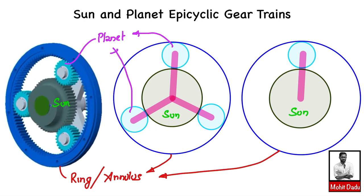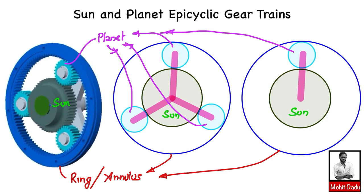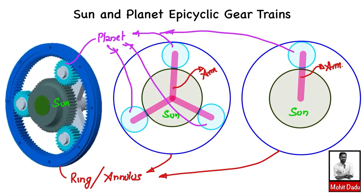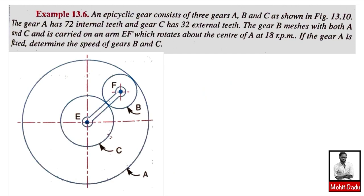In both figures, the three planet gears are represented, along with the arm or planet carrier connecting them. On the right side, the arm connecting all the planet gears is also known as the planet carrier. When solving problems, these kinds of figures will be given in the question, and you need to identify that it represents a sun and planet epicyclic gear train.